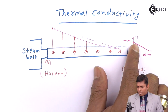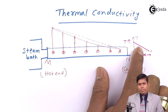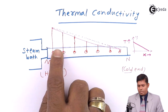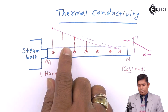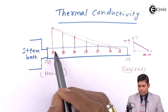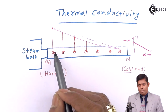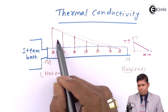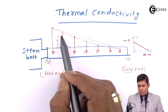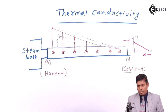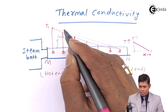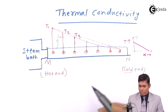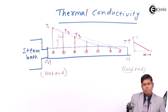In practice the graph is not a straight line because of heat loss due to radiation occurring between molecules during transfer. Suppose this temperature is T1, this is T2, this is T3, and so on — the temperature falls in this manner toward the other end.